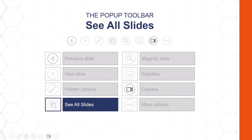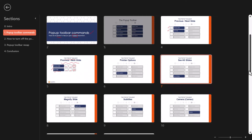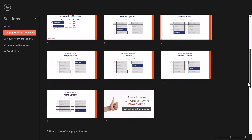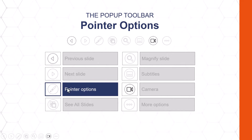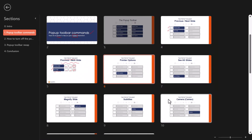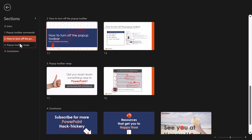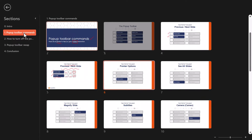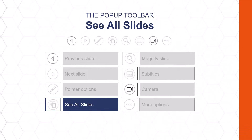The next command on our pop-up toolbar is the see all slides option, which is the new visual way to see all the slides in your presentation while you're giving a presentation. If I just click it on the pop-up toolbar, I can jump back to any slide by simply selecting it. I also want to point out that if you create sections for your PowerPoint deck, you can jump between them here in this see all slides view. When you find the slide you want, simply select it and you're back in action.